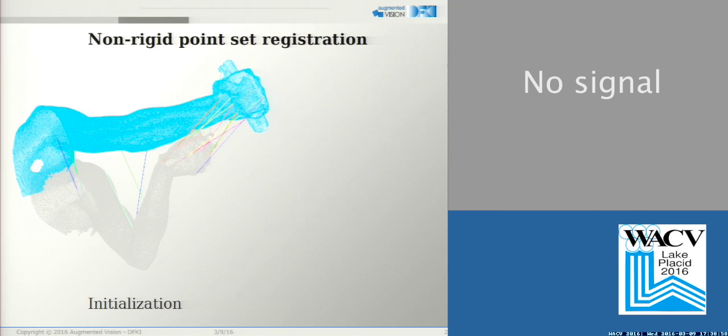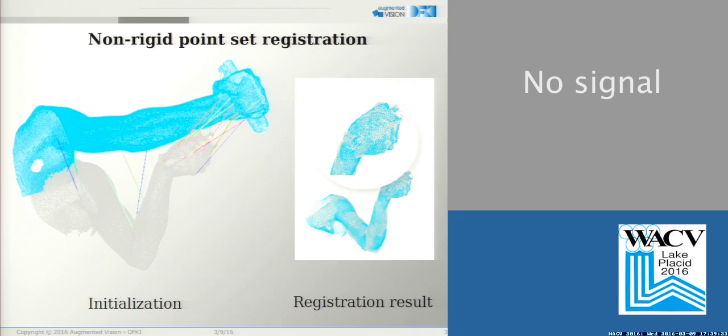We tackled the problem of the non-rigid point set registration where we're looking for an alignment of the template point set shown in the picture in cyan with a reference point set shown in gray. Often prior correspondences are given, shown with lines in different colors. Note that there can be noise in the prior correspondences. On the right you see a possible result.